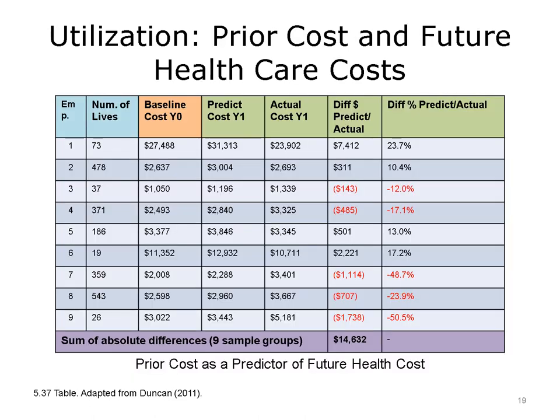This table shows how prior healthcare cost and utilization can be used for the prediction of future cost. The table lists the number of employer-based health plans, the number of members for each plan, and the baseline cost. The baseline cost is then used to predict future cost, as denoted by cost of year 1. As shown across the employer plans, prior cost is an important independent variable in predicting future cost. This model has resulted in less variation compared to the age and sex-only model discussed in earlier lectures.